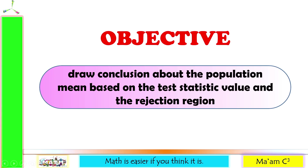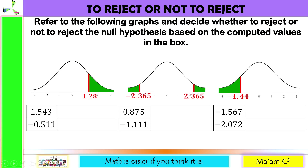Our objective in this lesson is to draw a conclusion about the population mean based on the test statistic value and the rejection region. Let's have a quick activity: to reject or not to reject. Refer to the following graphs and decide whether to reject or not to reject the null hypothesis based on the computed values in the box.